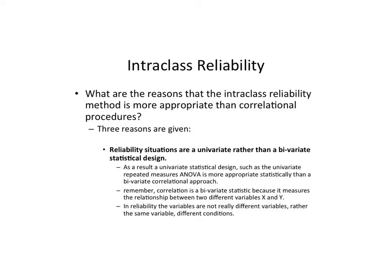Intraclass reliability is an alternative method to statistically analyzing reliability, as opposed to correlation. There are three major reasons why people believe that intraclass reliability, or an ICC — an intraclass coefficient — is a better approach. I would strongly encourage you to know these three reasons.